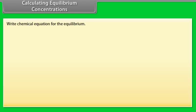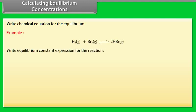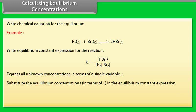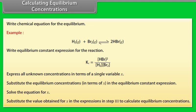Calculating equilibrium concentrations: Write the chemical equation for the equilibrium. Write the equilibrium constant expression for the reaction. Express all unknown concentrations in terms of a single variable X. Substitute the equilibrium concentrations in terms of X into the equilibrium constant expression. Solve the equation for X, then substitute the value of X to calculate the equilibrium concentrations.